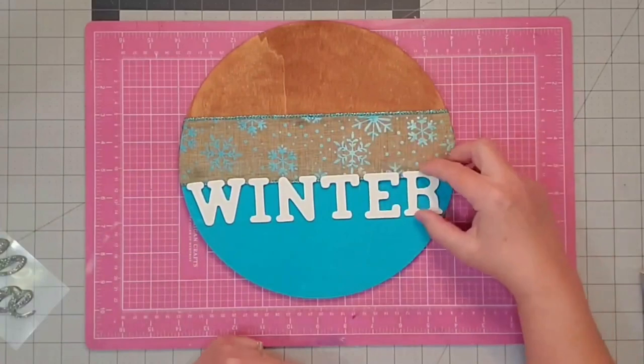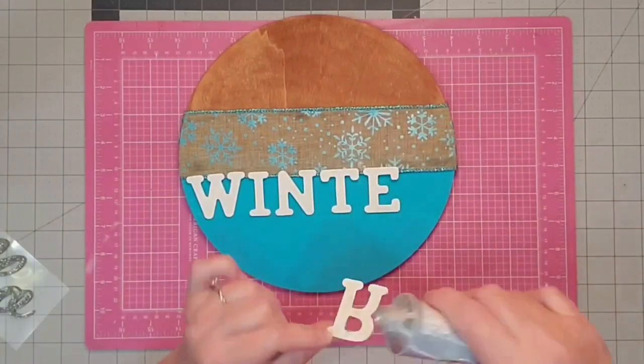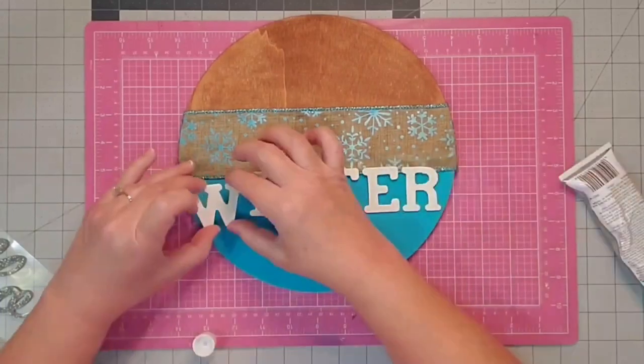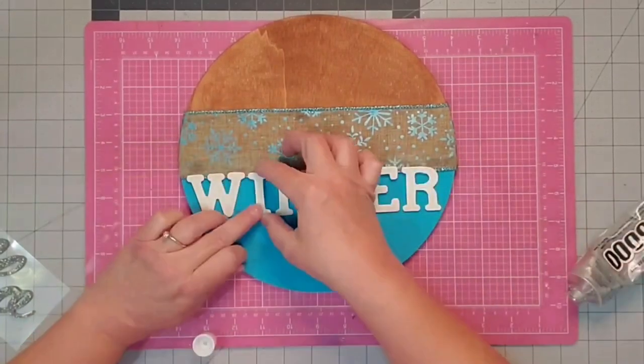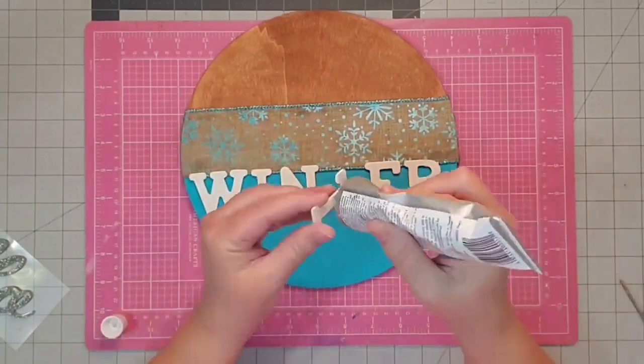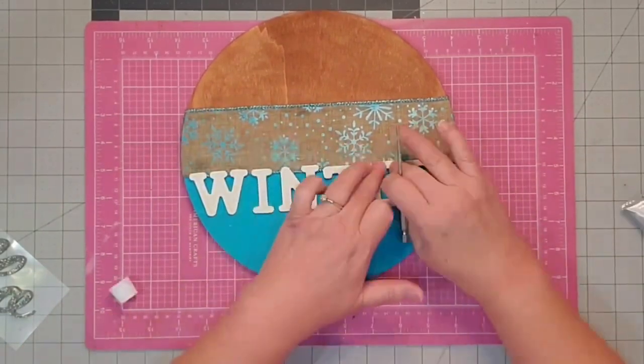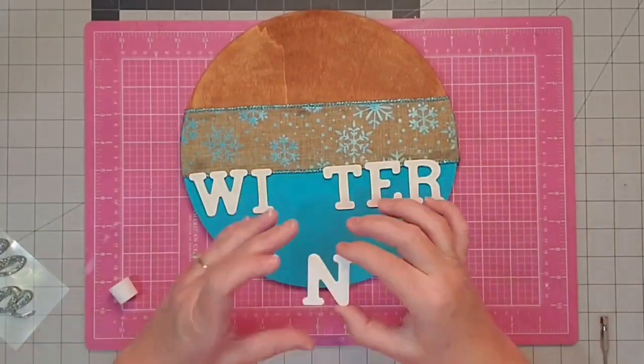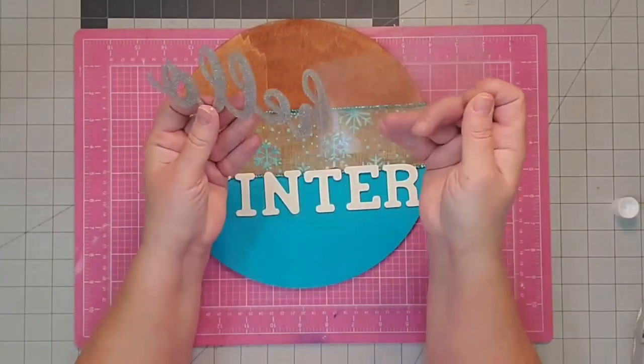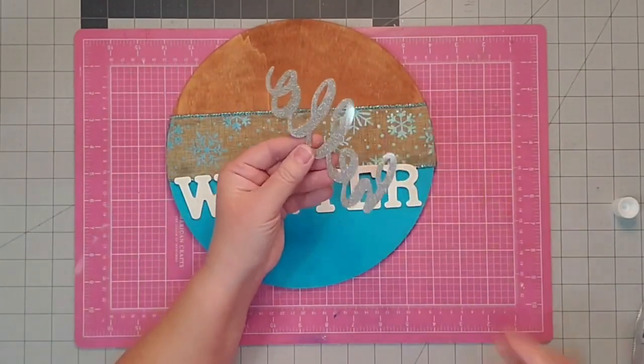Then I'm going to decide where to place my word 'winter' and then come in and carefully watch my spacing and glue it down with some E6000. I didn't use hot glue to attach it to this piece, although you could. I wanted to have some extra drying time so I could slide my letters around and get them perfectly spaced.